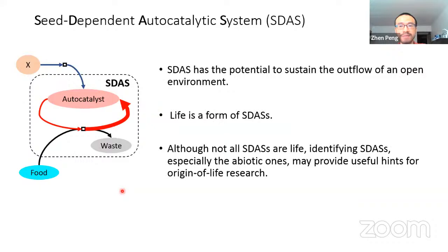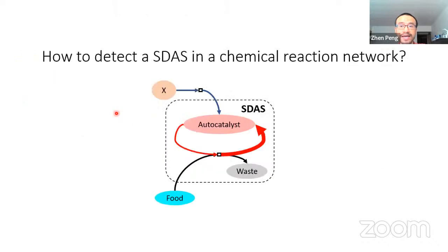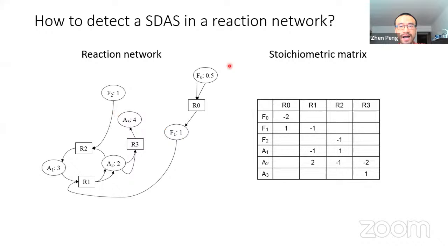We will call a system that performs seed-dependent autocatalysis a SIDAS. For origin of life research, finding SIDAS in reaction networks, especially abiotic ones, may provide useful hints. To find SIDAS, consider a hypothetical reaction network where chemical species are represented by circles and reactions by boxes. The reaction network can also be represented by a stoichiometric matrix, where each column represents a reaction and each row represents a chemical species. A reactant has a negative entry and a product has a positive one.